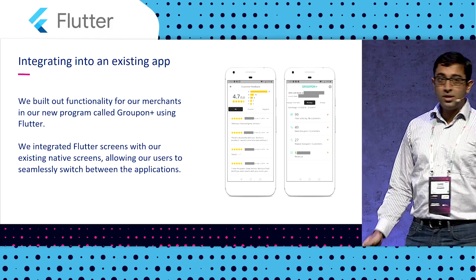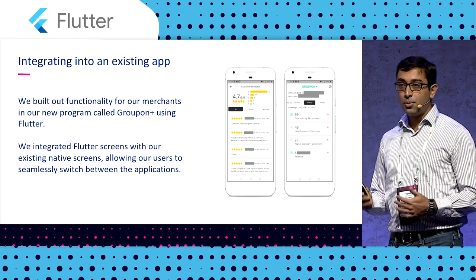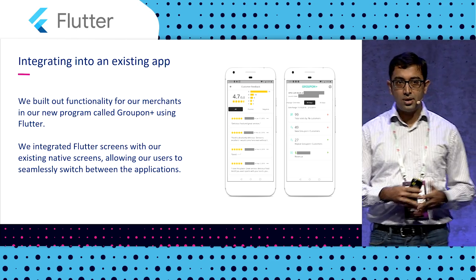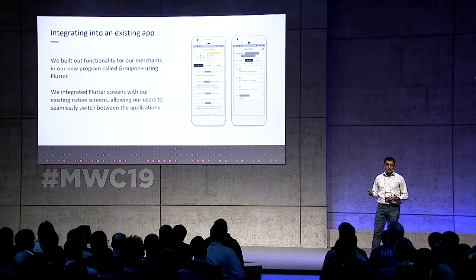Hi, everyone. I'm Varun Minghani and I lead the merchant product management team at Groupon. Our journey with Flutter started almost a year ago, where we were tasked with building functionality for merchants on Groupon's new program called Groupon Plus. At that time, we evaluated multiple options: build a brand new app, extend our native functionality, or take a cross-platform approach — build once and deploy twice. That's when we came across Flutter. We were excited by its capabilities to build cross-device and speed up application development, but we also wanted to make sure whatever we built integrated well into our existing functionality, was stable, and had no performance degradation for merchants using the app for business.